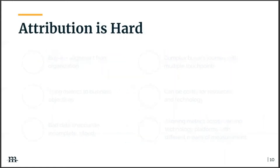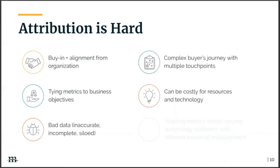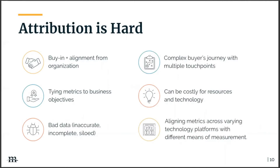But attribution is hard. Here's a glimpse into some of the things you're likely facing. Buy-in and alignment — not only do you need buy-in from the organization, you need alignment across all departments. Everyone could agree attribution is good, but with different definitions across departments, you're going to face discrepancies. Tying metrics to business objectives is challenging both because of the increasing number of data points available and because organizations don't always provide actionable goals.